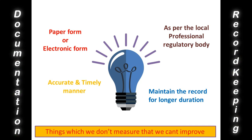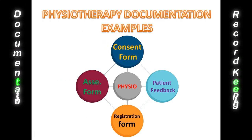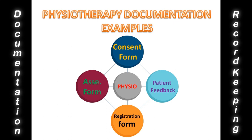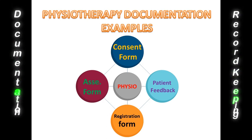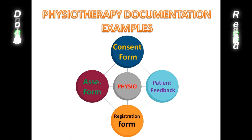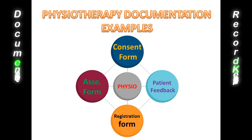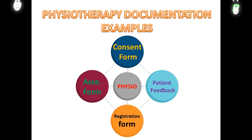There are four main types of physiotherapy documentation. The first is a consent form, where we get written permission from the patient to give treatment and explain the risks involved. It is always good practice to take permission from the patient in writing before treatment. The second is the assessment form, where we mention demographic data including name, age, sex, occupation, religion, address, history taking, assessment, and examination.